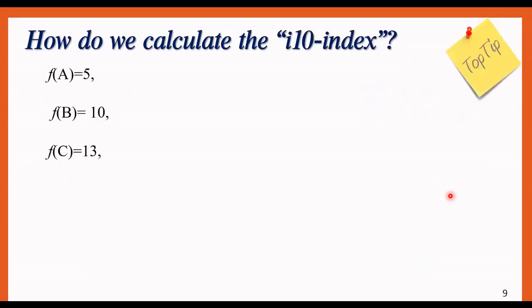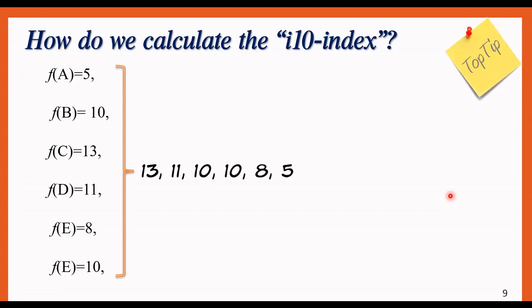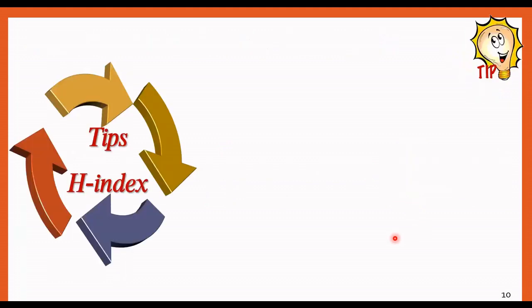How do we calculate the i10? It's really easy, easier than the H-index. Suppose that we have a researcher with these papers. I put them like this. It is not necessary to order from the largest to the lowest, but I put it for better understanding. The i10-index would be four because 13, 11, 10, 10—four papers with more than 10 citations. So the i10 would be four.